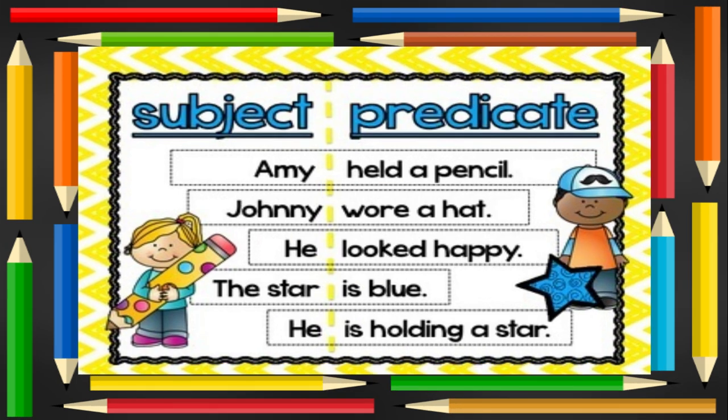Let's look at a few examples here and keep your eyes out for the subjects and predicates in the sentences. 'Amy held a pencil.' 'Johnny wore a hat.' 'He looked happy.' 'The star is blue.' 'He is holding a star.'